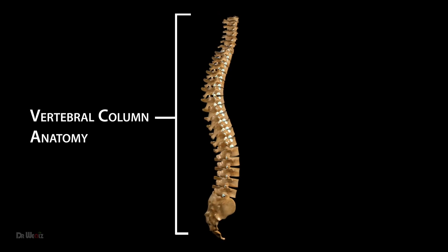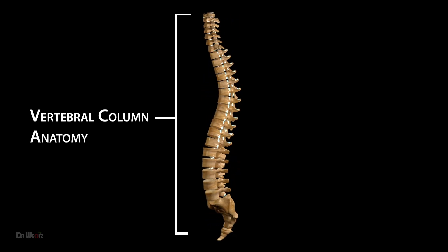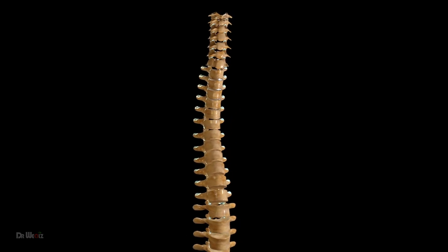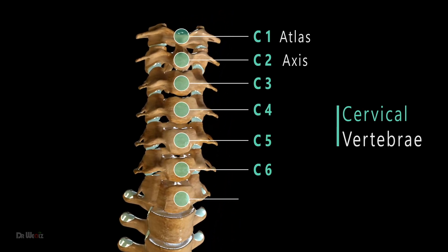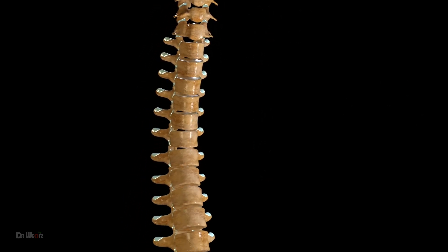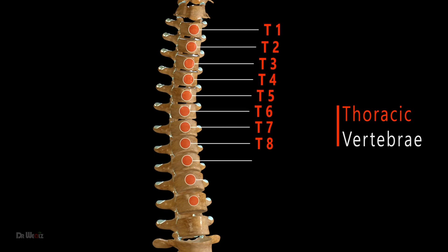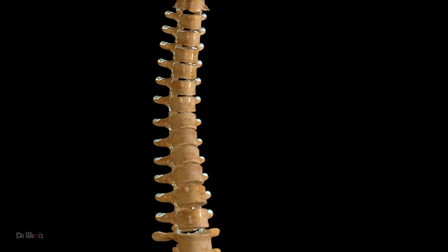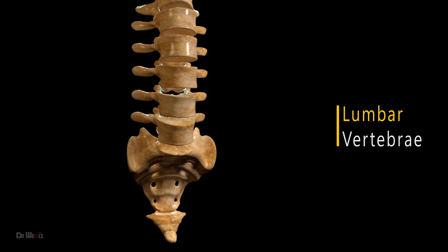The human vertebral column, also known as the spine, is a complex structure that serves as the primary support for the human body. It is composed of 33 individual vertebrae that are separated by intervertebral discs. The vertebral column plays a crucial role in protecting the spinal cord, which runs through a central canal within the vertebrae and transmitting forces between the upper and lower body.